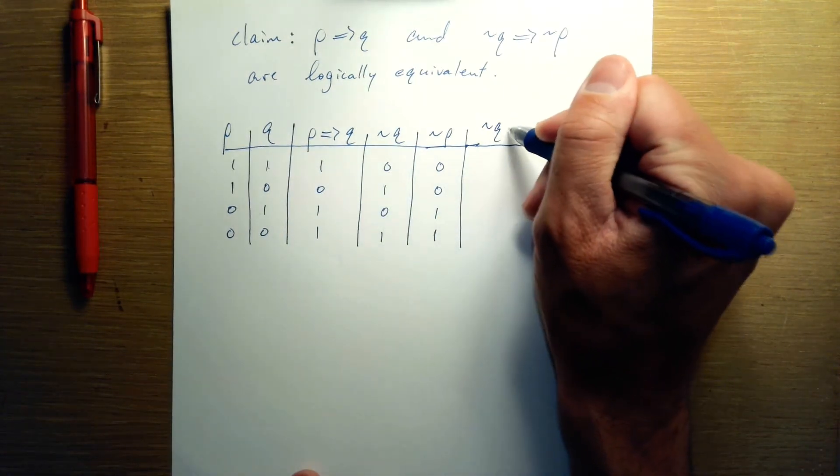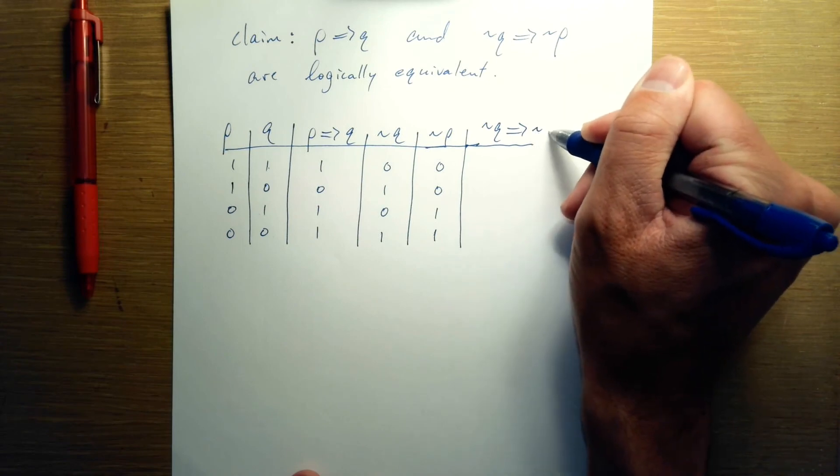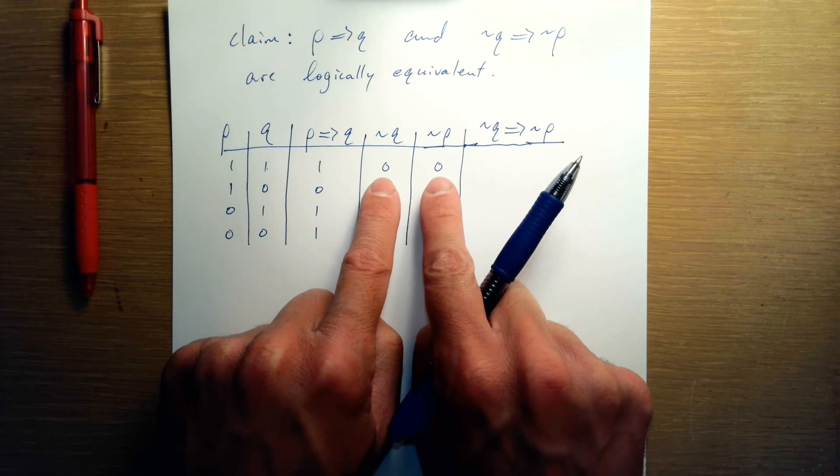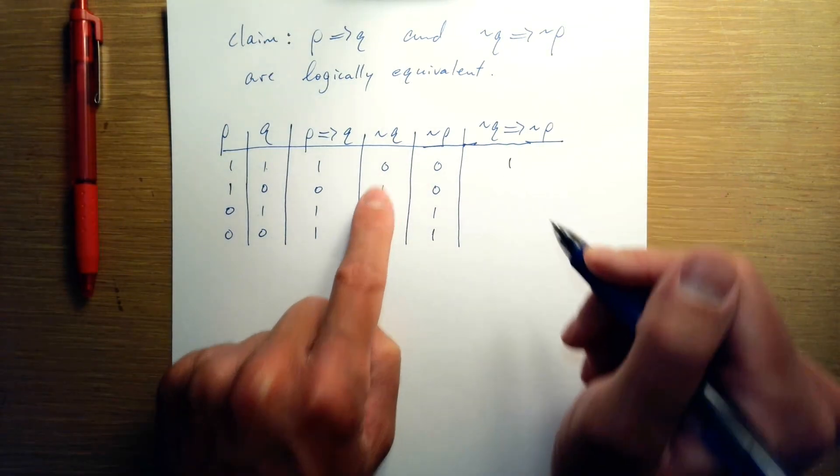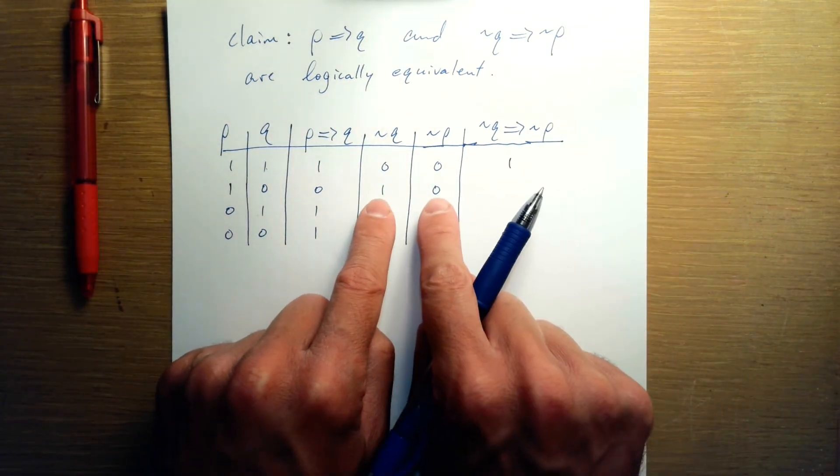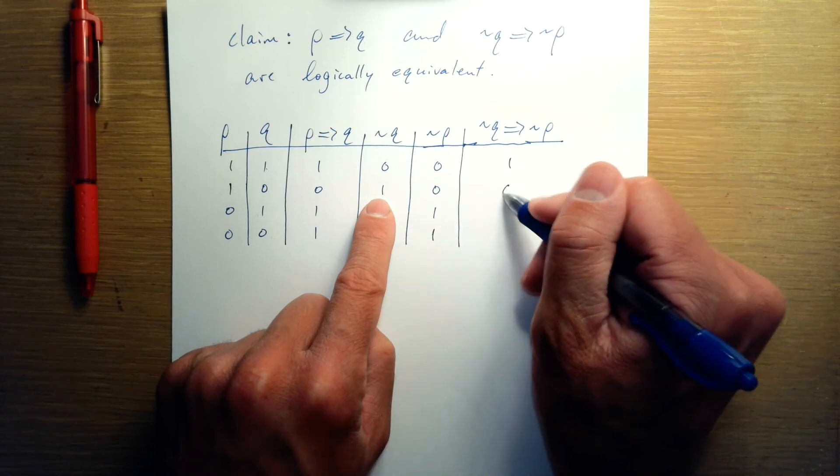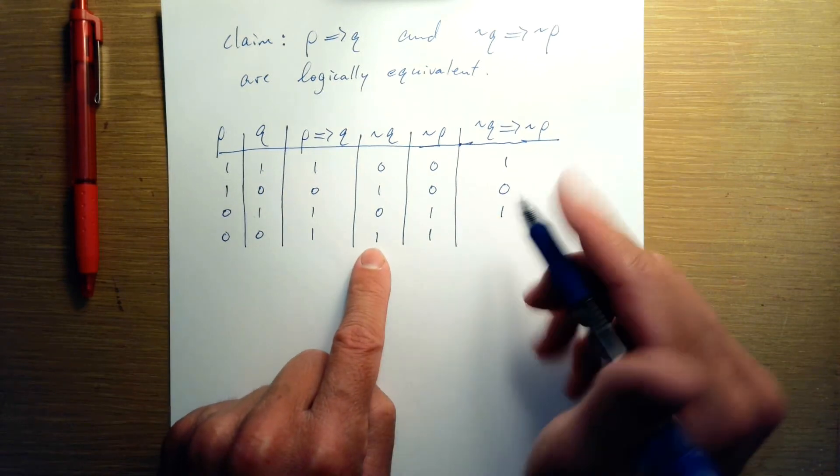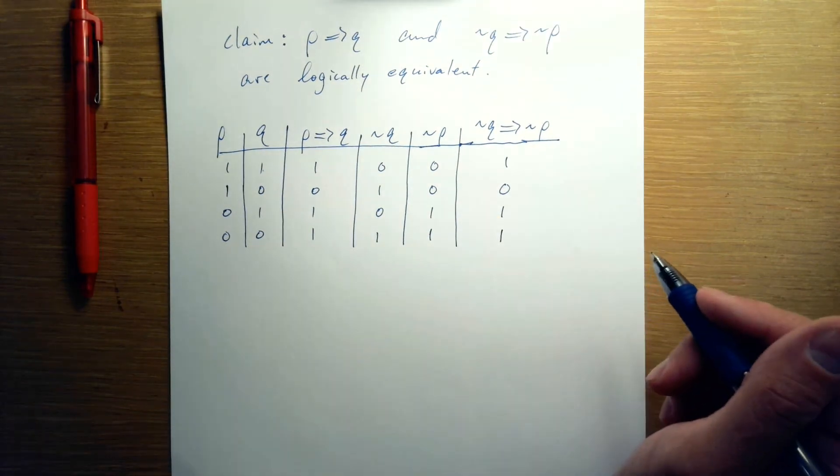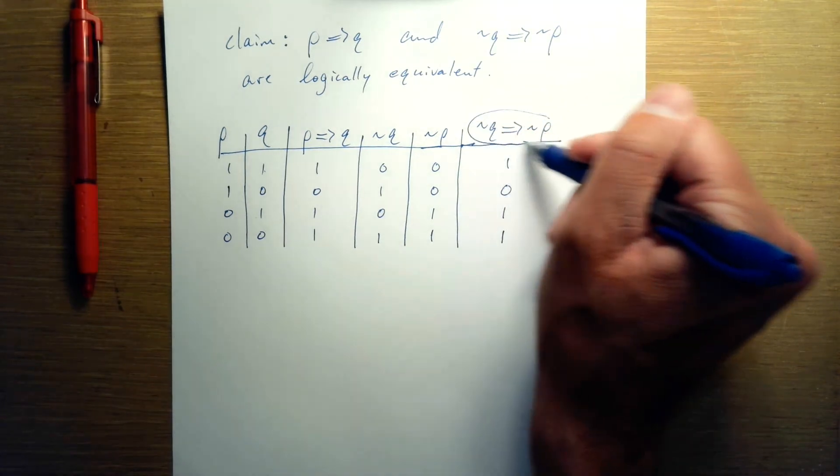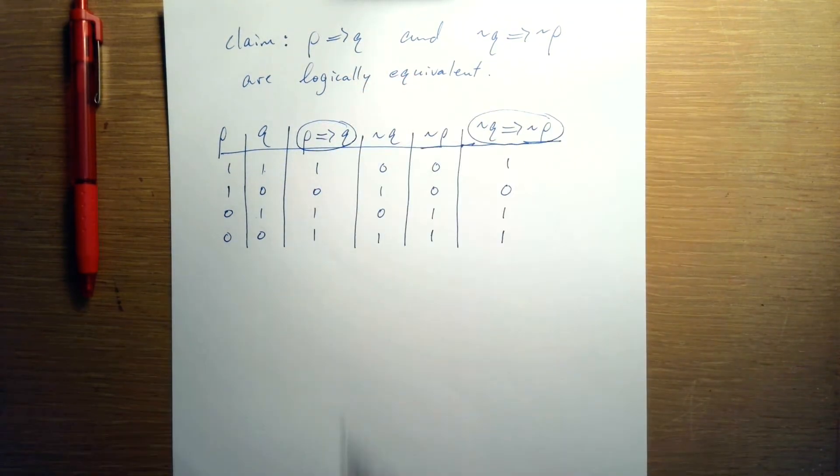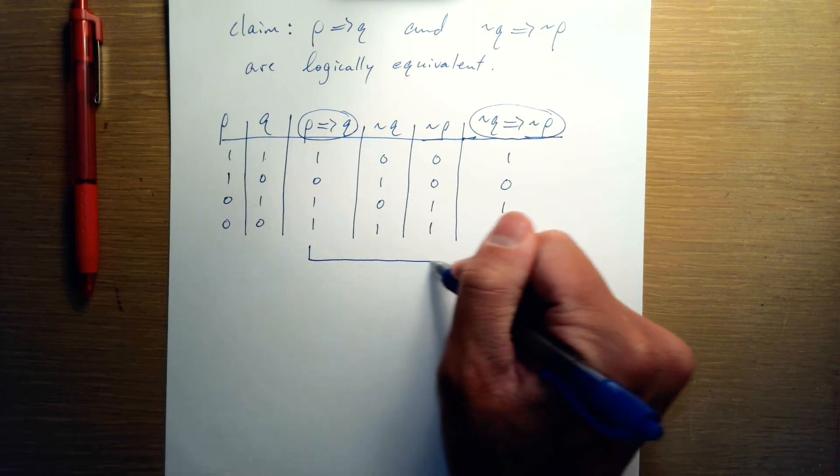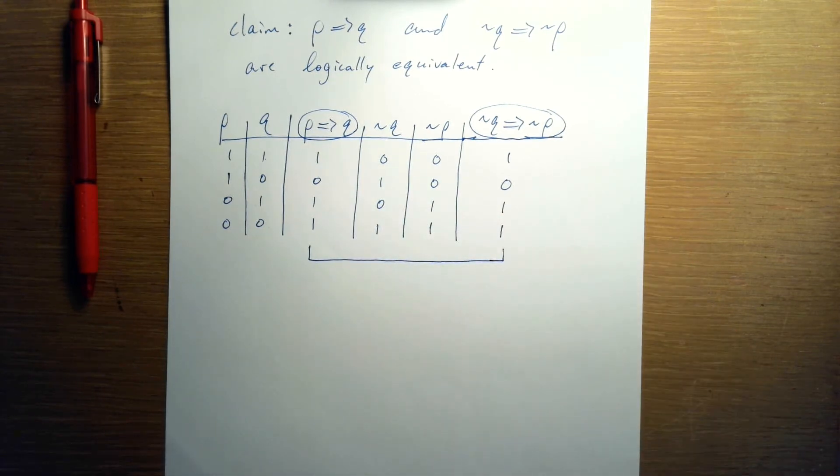NOT Q implies NOT P. We examine these two. False implies false, that's a true statement. True implies false, that's a false statement. False implies true, that's a true statement. And true implies true, that's a true statement. And notice that these are the two statements that we're trying to prove are logically equivalent. And these are their corresponding columns. And they're exactly the same.